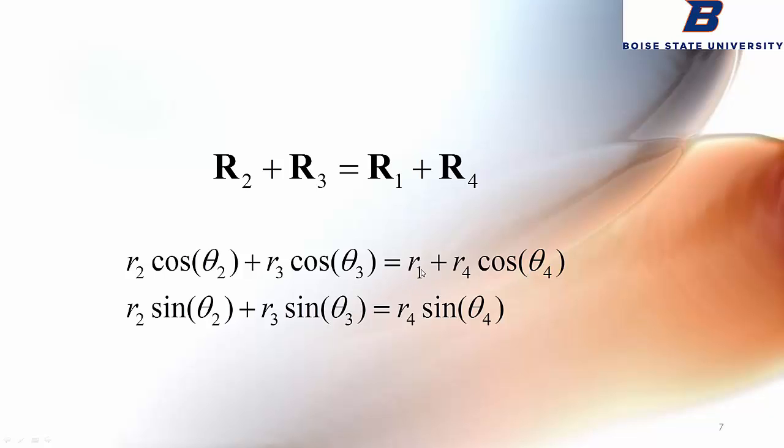We almost always set up our coordinate systems so that the x-axis goes through the other pivot point, which by definition makes the angle of R1 constant and makes it zero. Theta 1 is often just assumed to be zero. Theta 2 is usually given to us. Theta 3 and theta 4 is what we're trying to find. If we were being very careful, we'd say this is R1 cosine of theta 1. Theta 1 is zero, so that's R1 times 1. In the y direction, we have the same form but with sines instead of cosines. This makes up the essence of our two equations and two unknowns.